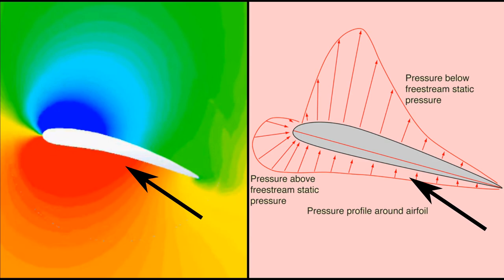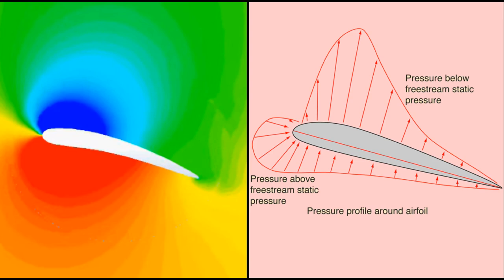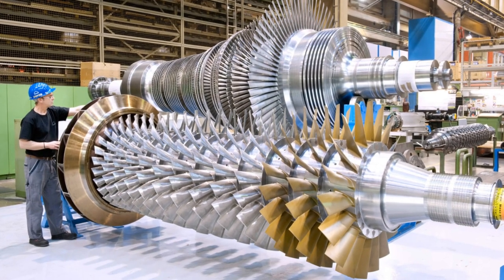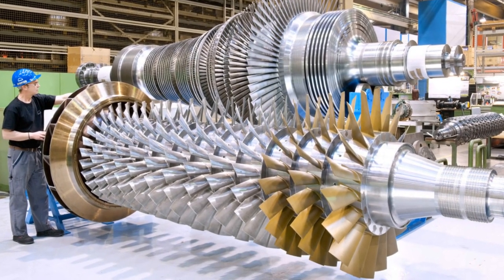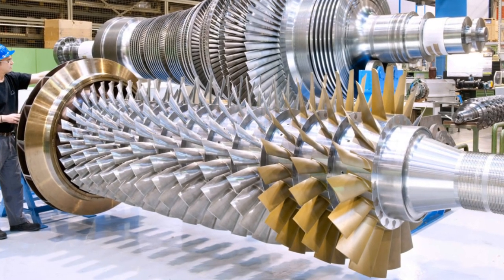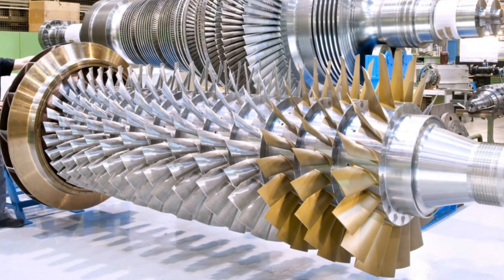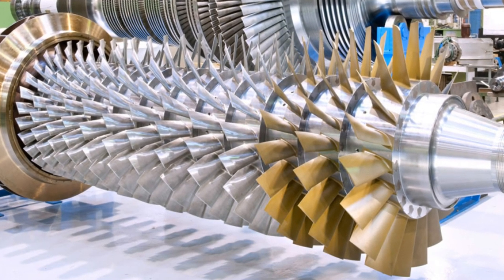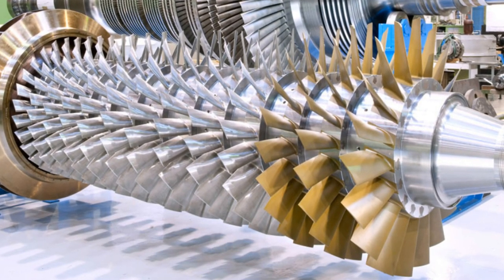These subsonic compression processes are isentropic, meaning that the compression happens smoothly and without any losses. The expansion processes which return the air to the ambient pressure are also isentropic. Gas compression and expansion is most efficient when it is done gradually over a large number of small steps. This is why high-efficiency compressors and turbines have many rows of blades, with each providing only a small change in pressure. You can imagine an isentropic process as a hypothetical machine with infinite rows of very narrow, frictionless blades.